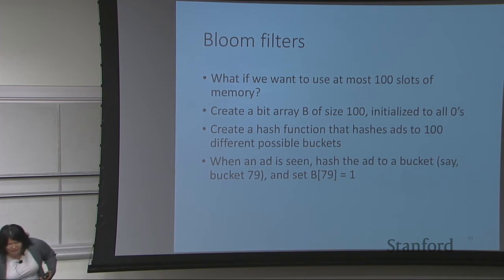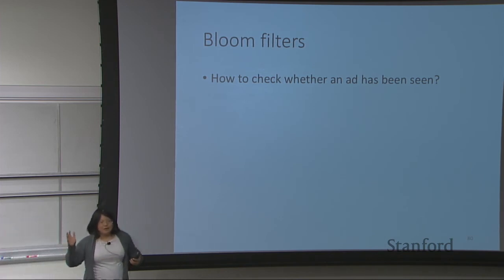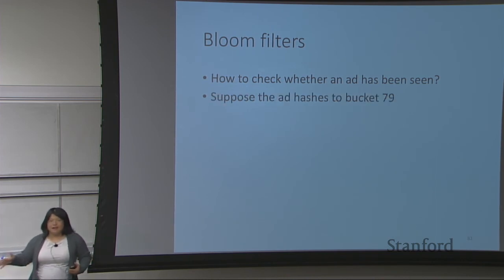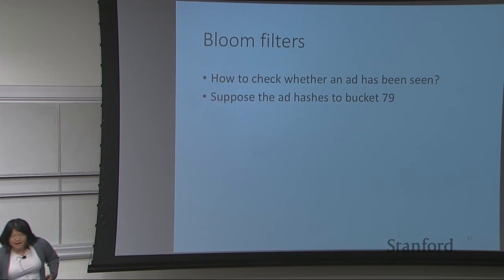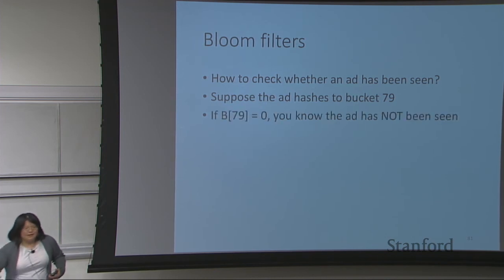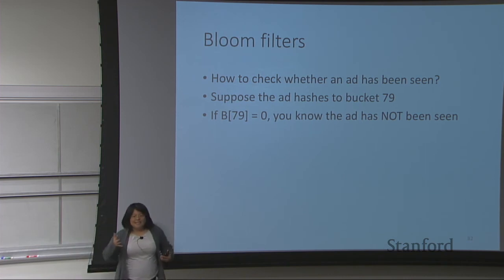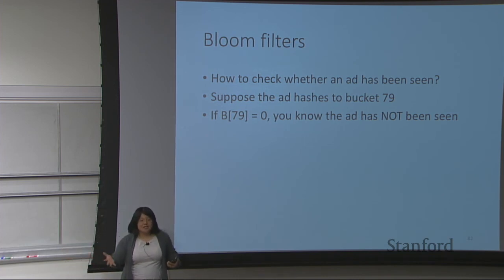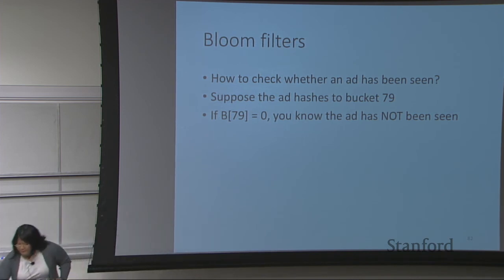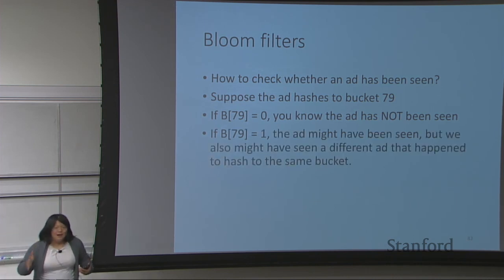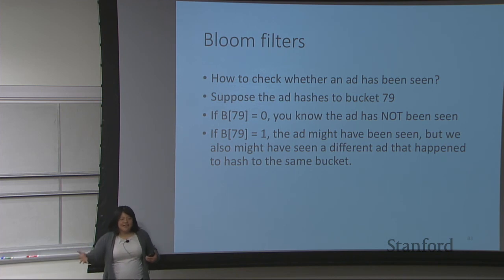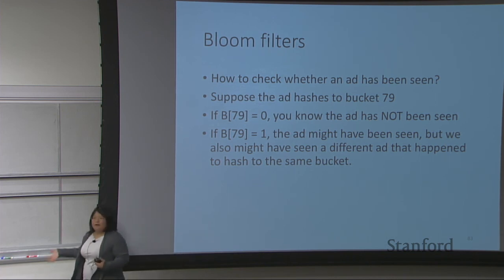So what do you do after that? When you want to check whether an ad has been seen, instead of using a huge hash table, you just look at the position in the bit array. Say the new ad hashes to bucket number 79. If position 79 in the bit array is zero, then you know for sure the ad has not been seen, because if it had been seen we would have set that position to one. However, if the entry is one, there are two possibilities: either we've seen the ad, or we saw a different ad that also happened to hash to 79. That would be a false positive.